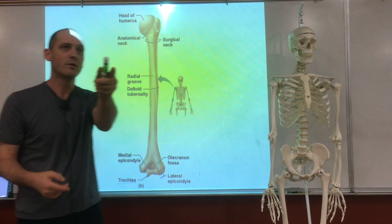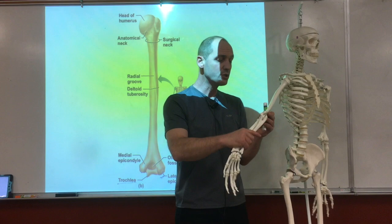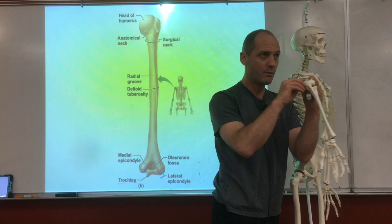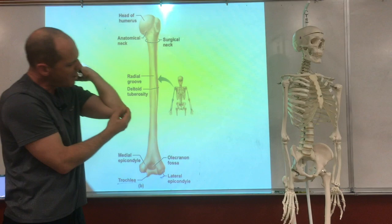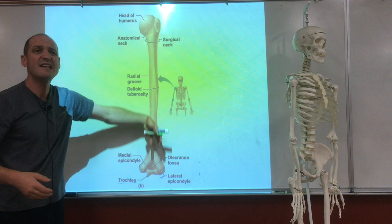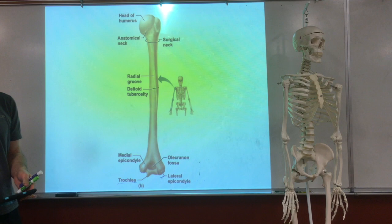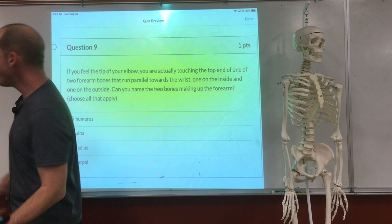When you see the word fossa, you're always thinking a shallow depression of some kind. What you can feel on yourself is the tip of your elbow — the tip of your elbow is the olecranon process. It's a bump from the lower arm bone that fits into that shallow depression. You can't feel the fossa itself because above it is a big tendon — all the muscle and tendon goes right into here, so it obscures it. But it's there. Olecranon fossa — that's on the list.